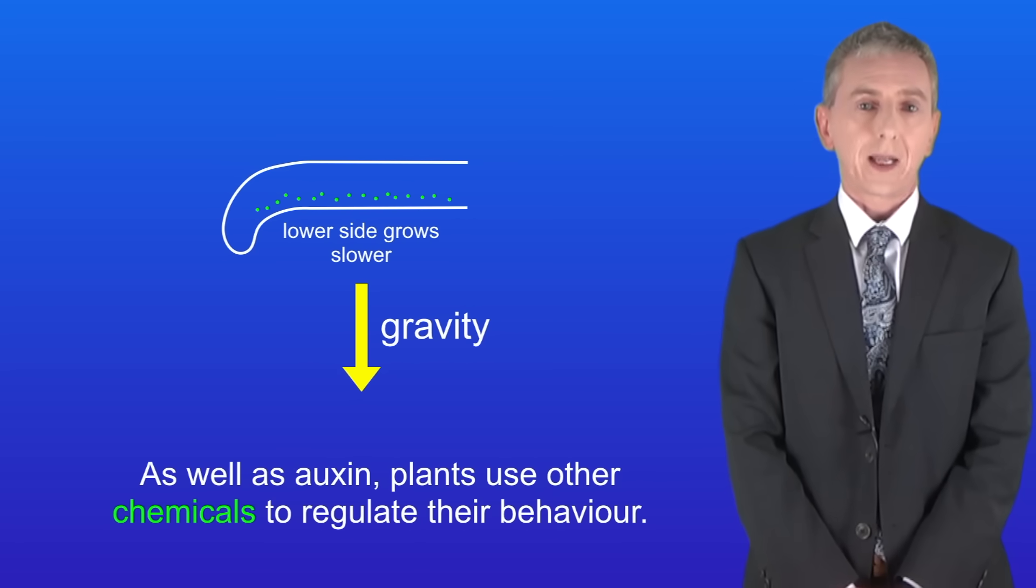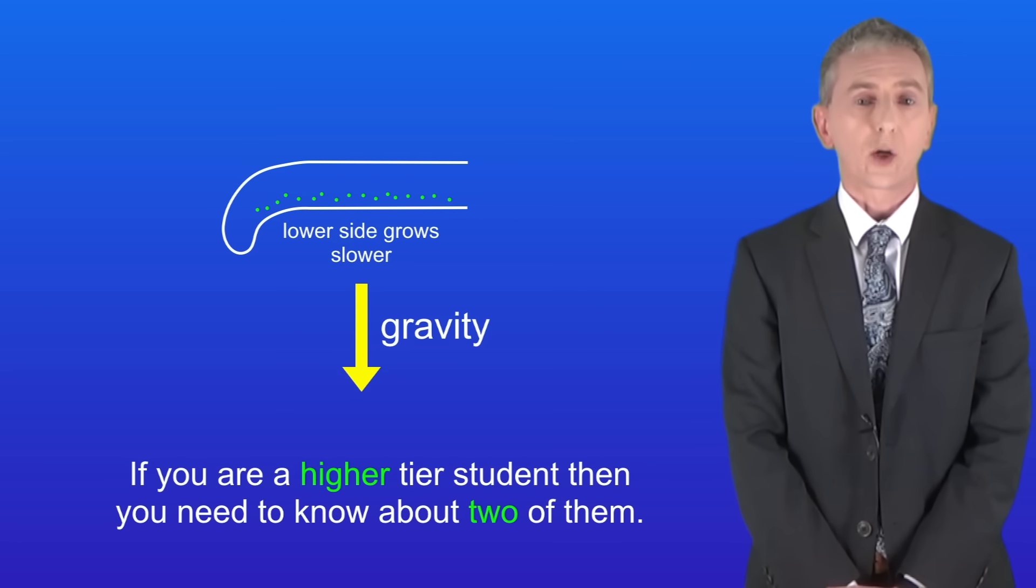Now as well as auxin, plants use other chemicals to regulate their behaviour, and if you're a higher tier student then you need to know about two of them.